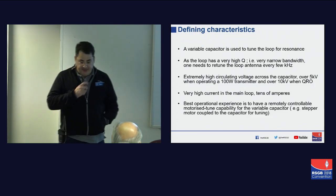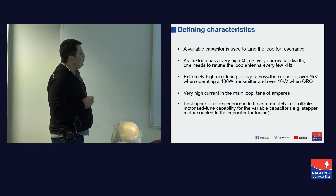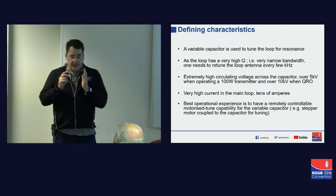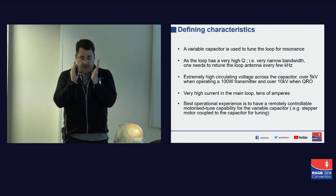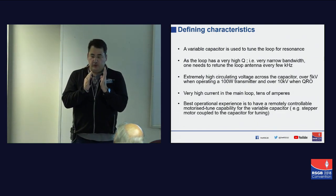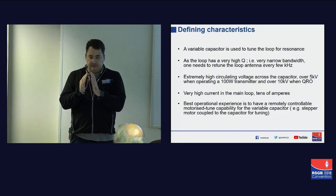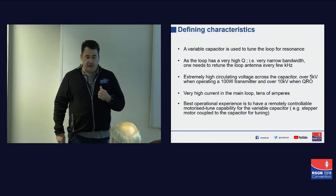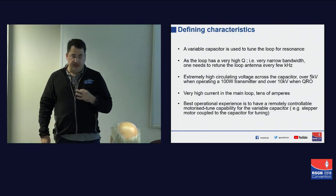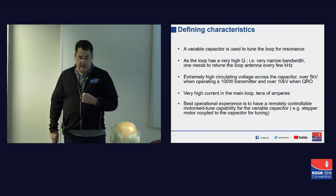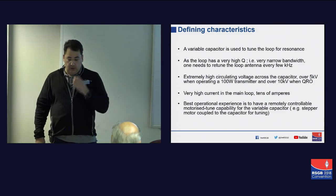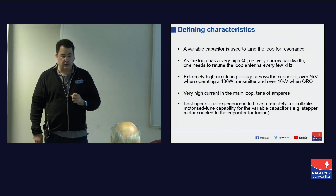Some of the defining characteristics: we use this variable capacitor to tune the loop for resonance. As this loop has a very narrow bandwidth — very high Q — every time you want to change frequency or band, every 20 kilohertz, you're going to want to retune. You also have extremely high circulating currents in the loop and very high voltages across the capacitor, which we'll go into in terms of what this means for construction.